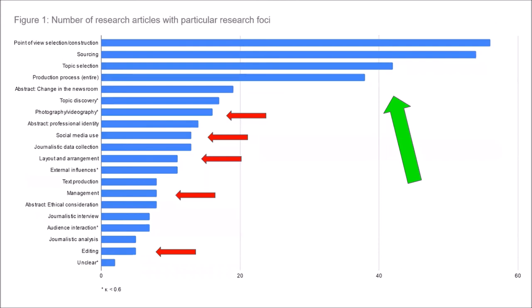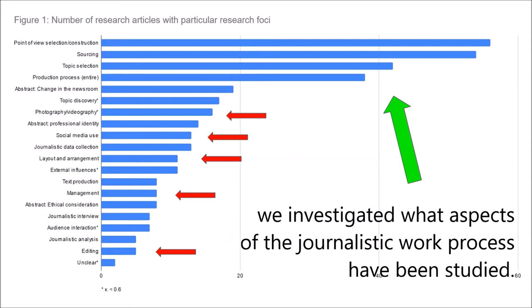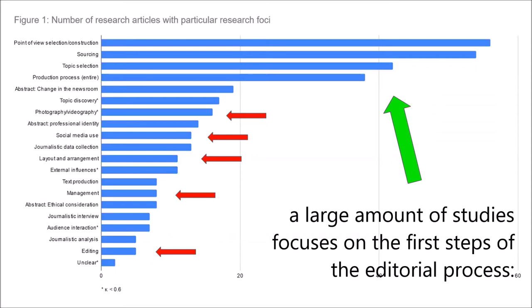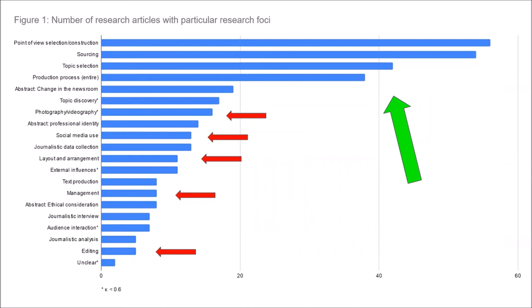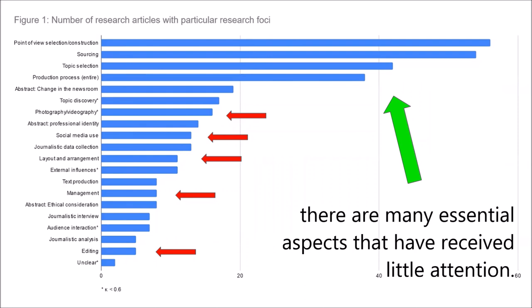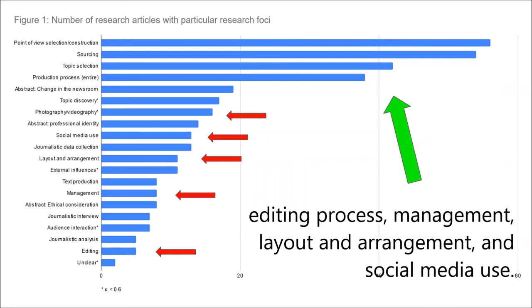For example, we investigated what aspects of the journalistic work process have been studied. As this table shows, a large amount of studies focuses on the first steps of the editorial process: topic selection, point of view selection, and sourcing. And at the same time, there are many essential aspects that have received little attention — for example, photography and videography, editing process, management, layout and arrangement, and social media use.